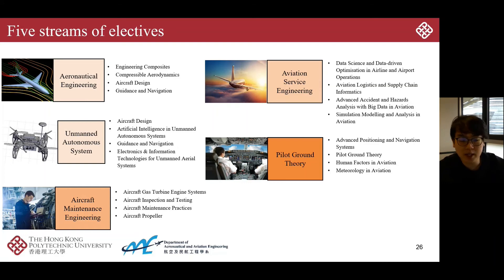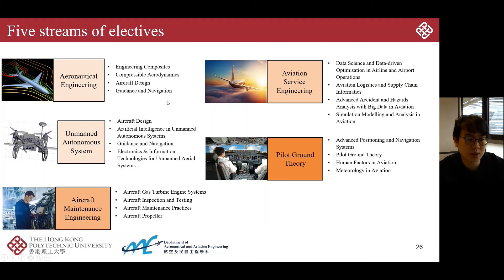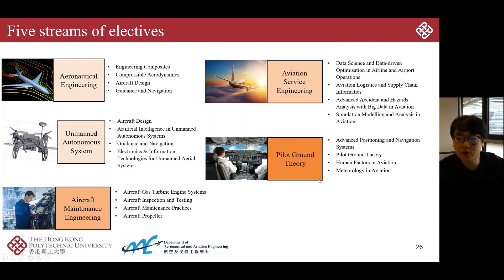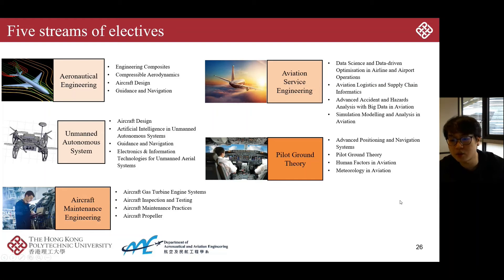Beyond the AE and ATE awards, we also offer five streams of electives. If you want to go further in aeronautical engineering, you can select four subjects from that stream. We also provide knowledge in UAS and Autonomous Systems, Affective Engineering, Aviation Surface Engineering, and Pilot Ground Theory. Students are allowed to select electives from different streams to tailor their own choices.